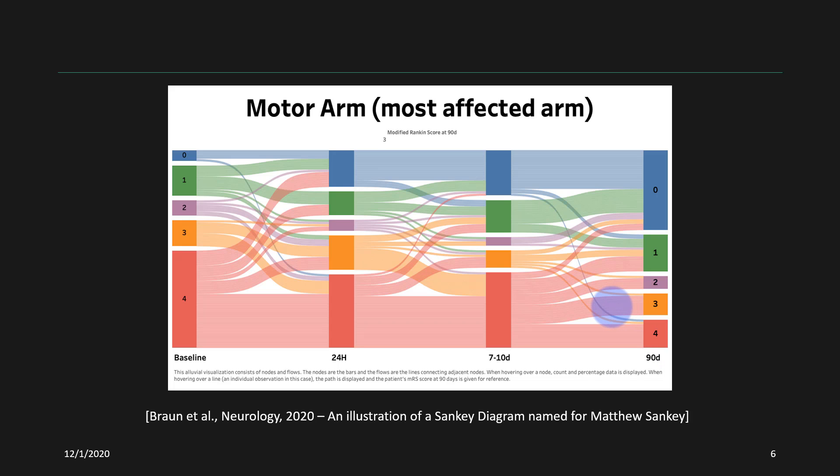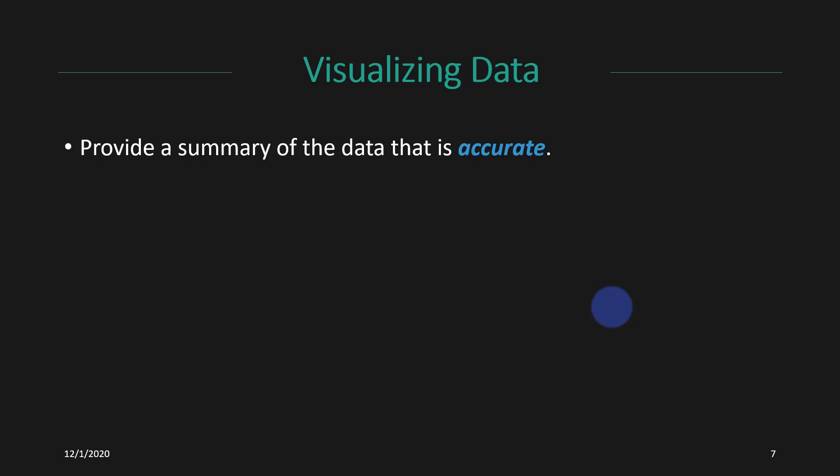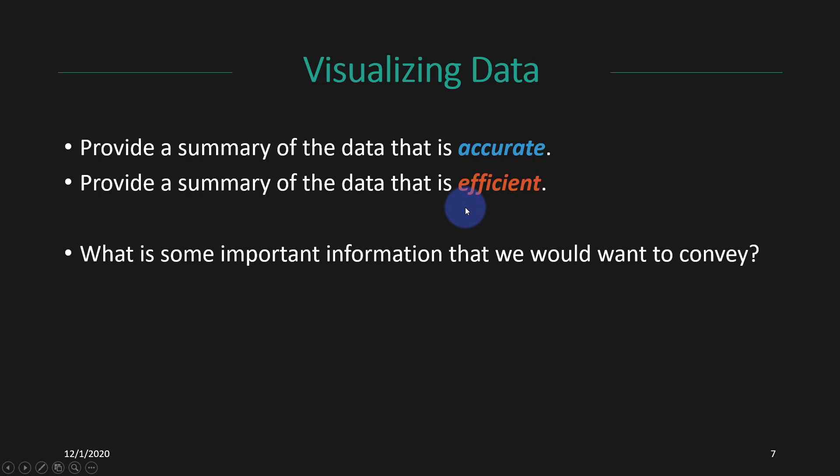So again, lots of different ways of presenting information, but there are going to be some key features of presenting information that make for good data visualizations. First, we always want to provide a summary of the data that is accurate. And second, we want to provide a summary of the data that is efficient. These two things can at times be at odds, because one of the most accurate things might be for me to just plot every single data point that I have, but it's not necessarily very efficient, because someone can't quickly look at all of that raw data and get a sense of what the data is saying. So we always want to make sure that our data are as accurate as possible, we don't want it to be misleading, but we also want it to be easy to understand.